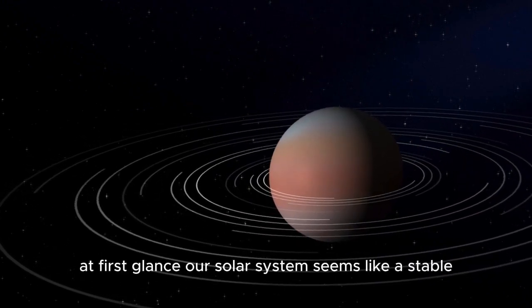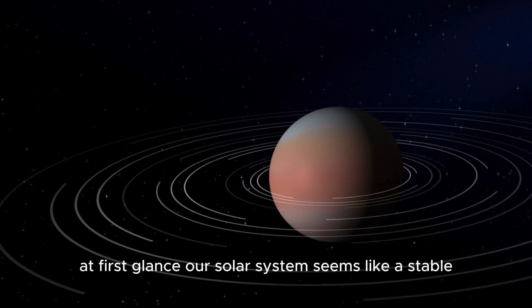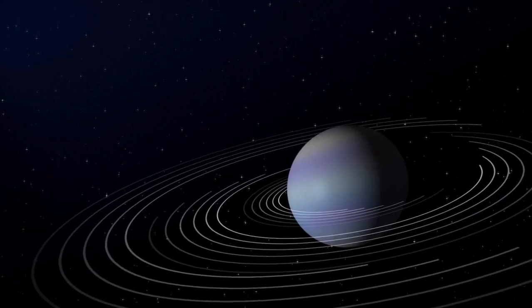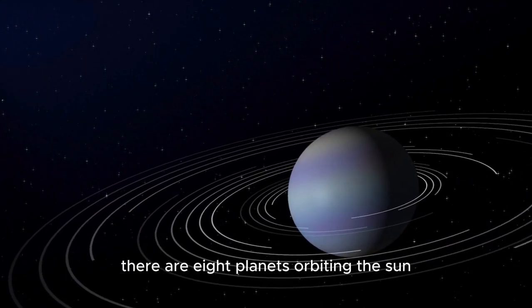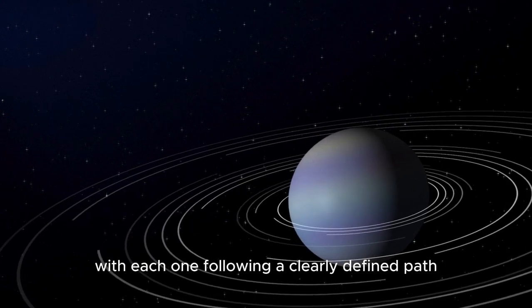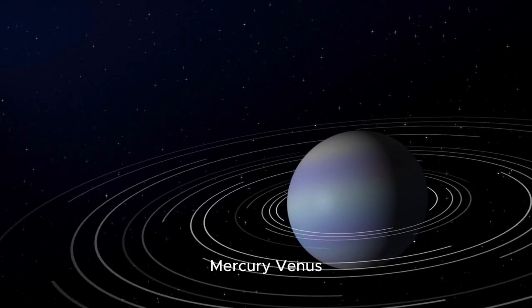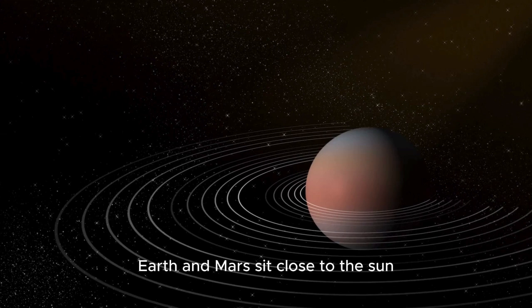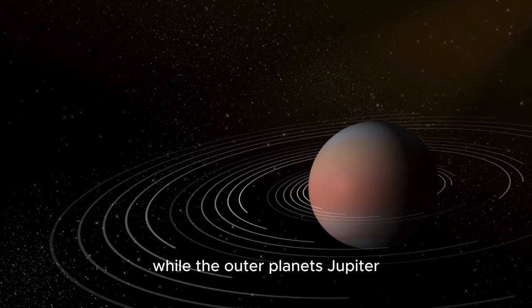At first glance, our solar system seems like a stable, predictable place. There are eight planets orbiting the sun, with each one following a clearly defined path. Mercury, Venus, Earth, and Mars sit close to the sun, while the outer planets, Jupiter, Saturn, Uranus, and Neptune, orbit farther out.